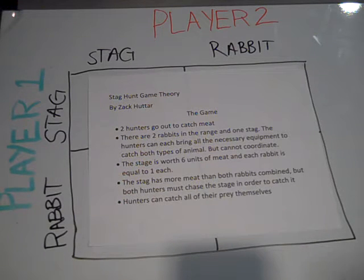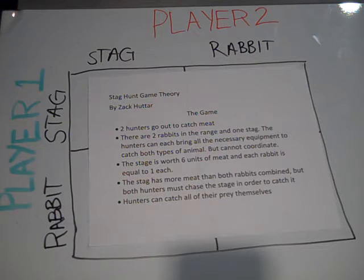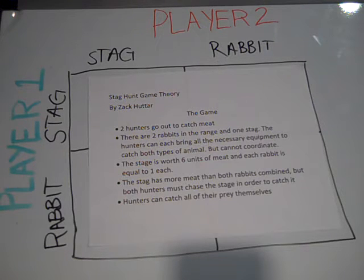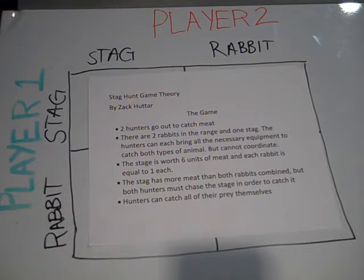The stag hunt involves two hunters that go out to catch meat. There are two rabbits in the range and one stag. The hunters bring everything necessary to hunt either one of the animals, but cannot coordinate together with one another before they go out. The stag is worth six units of meat, and each rabbit is equal to one.